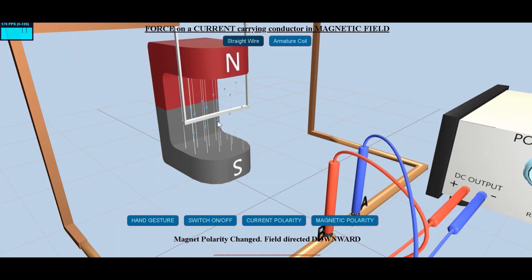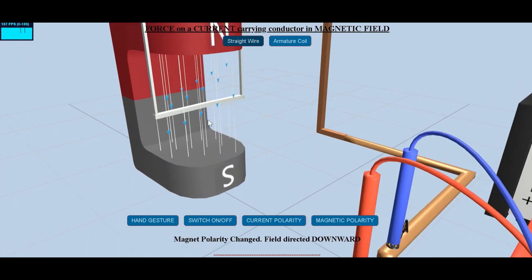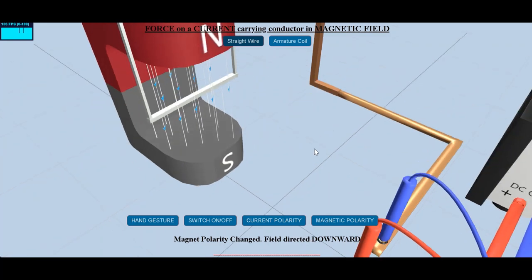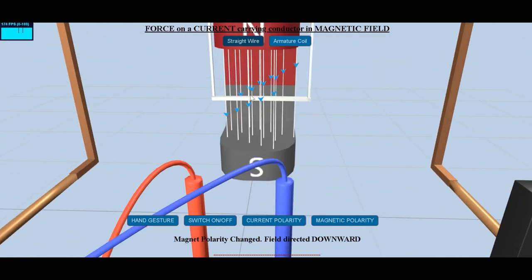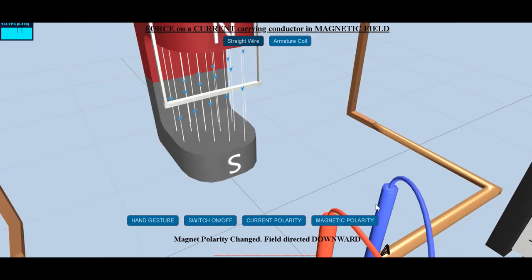The conductor experiences maximum force when it is held perpendicular to the magnetic field and experiences no force when it is held parallel to the magnetic field.